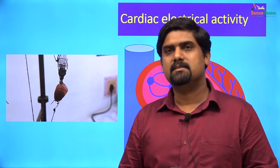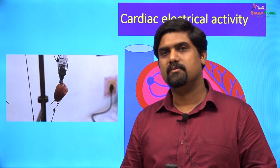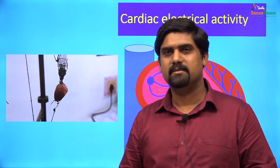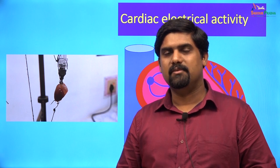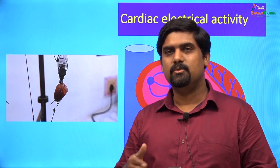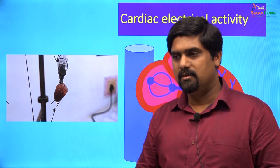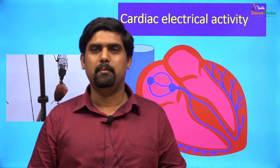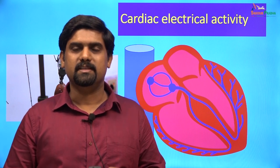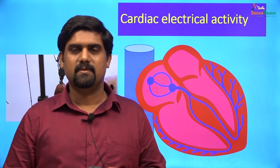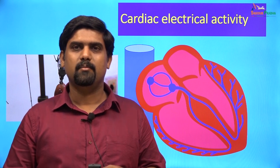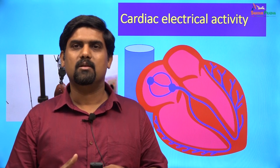Our hearts start beating from about 5 to 6 weeks of intrauterine life and then continue beating until we die. If we take a 70-year-old person, knowing that our hearts beat 70 beats per minute, doing the math for 70 years reveals that our hearts beat about 2.5 billion times. It is amazing that the heart is capable of continuously beating so many times. It is capable of generating an automatic rhythm as well as maintaining this automaticity in a rhythmic fashion for a long period.